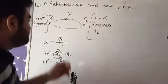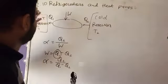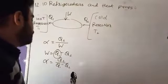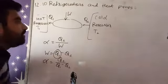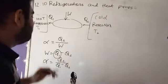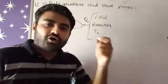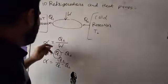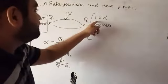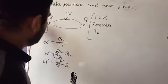So, jitna Q1 ho sake utna kam rakhna hai toh iska jo difference ho ga woh hume kam milega aur alpha we get more. And also we can get more alpha by giving more heat energy from cold to hot reservoir.